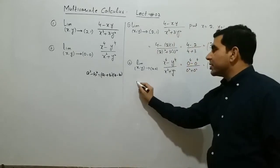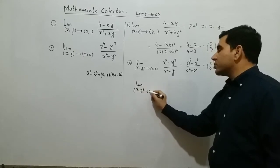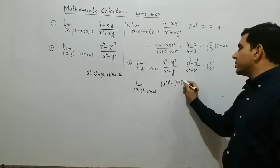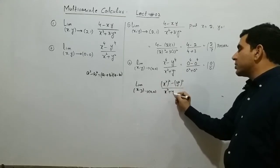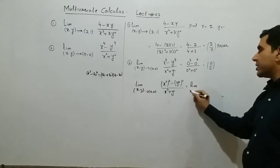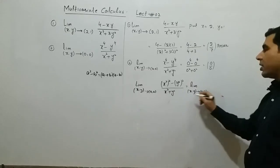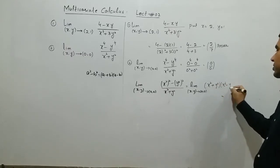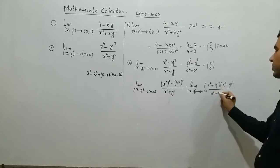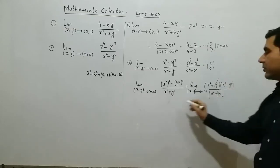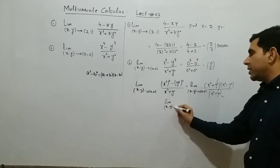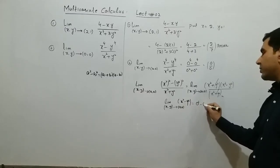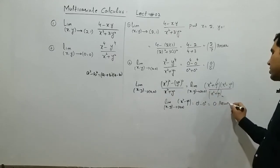Using the formula a squared minus b squared equals (a plus b)(a minus b), we write x to the power 4 minus y to the power 4 as (x squared plus y squared)(x squared minus y squared), divided by x squared plus y squared. The (x squared plus y squared) terms cancel. Now taking the limit as (x, y) approaches (0, 0) of x squared minus y squared, putting x equal to 0 and y equal to 0 gives 0. This is our required answer.